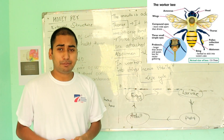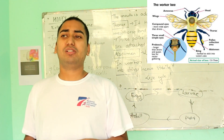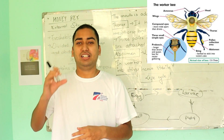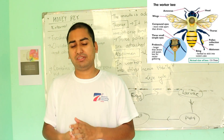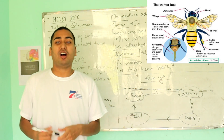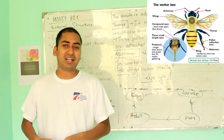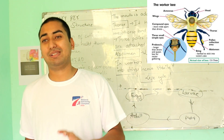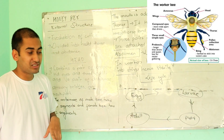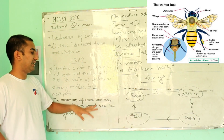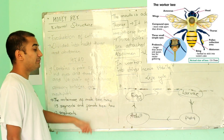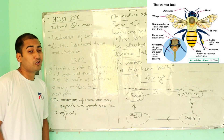On the head, there is a pair of compound eyes and also an ocellus — a simple eye. There is a pair of antennae with 13 segments, and there are sensory bristles on the antennae as well.